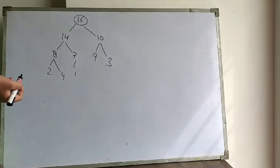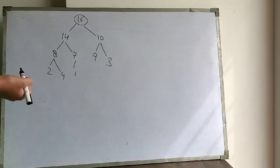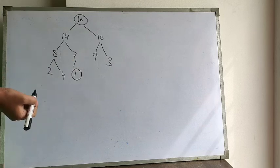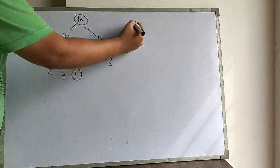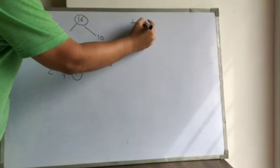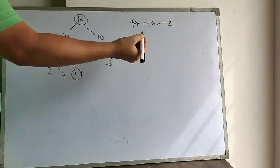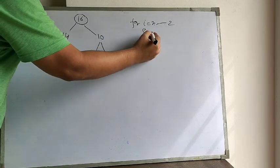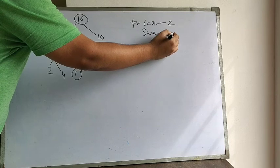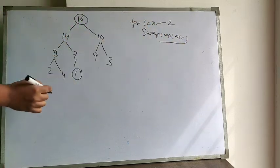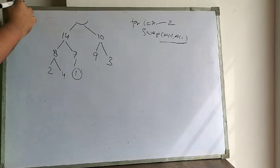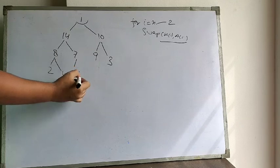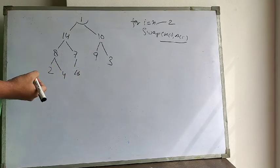In the heap sort algorithm we start from the very last element. The loop runs from i equal to n down to 2, and we swap the first and last elements. So when we do the swap, 1 will be at the top and 16 will be at the last position.